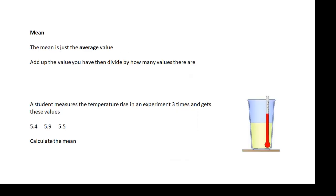Now, hopefully you can work out the mean of a set of values by now. The mean is just the average value. You add them up and then you divide by how many there are. That's the average.